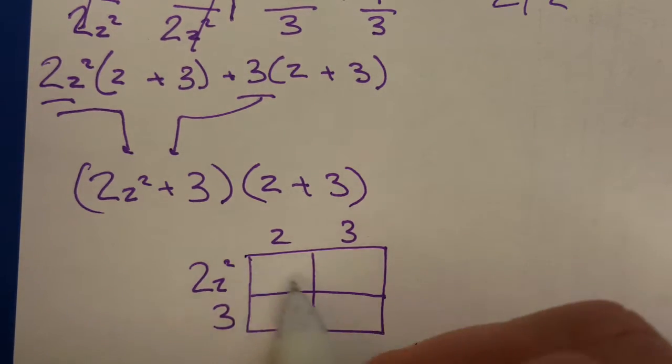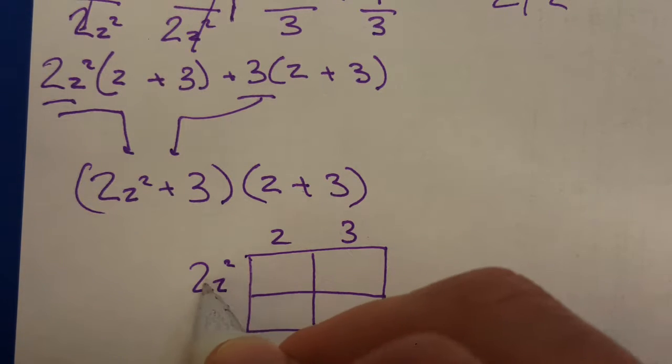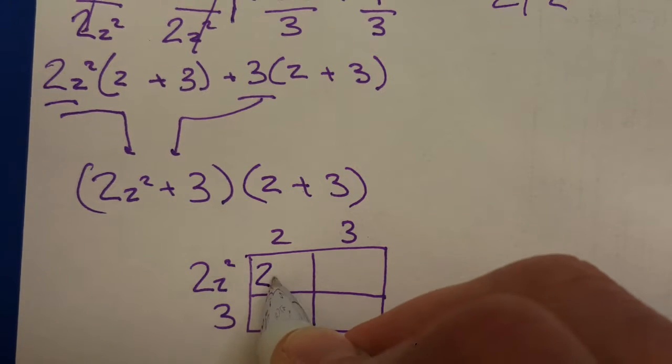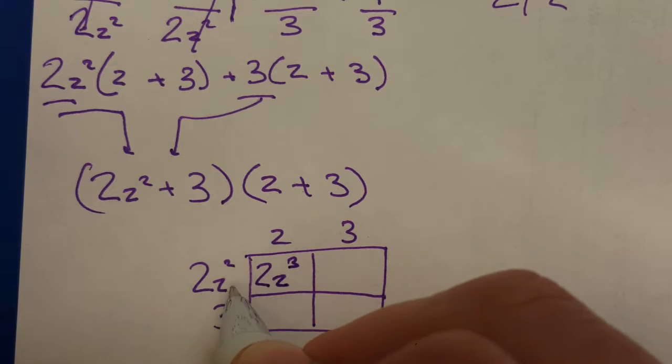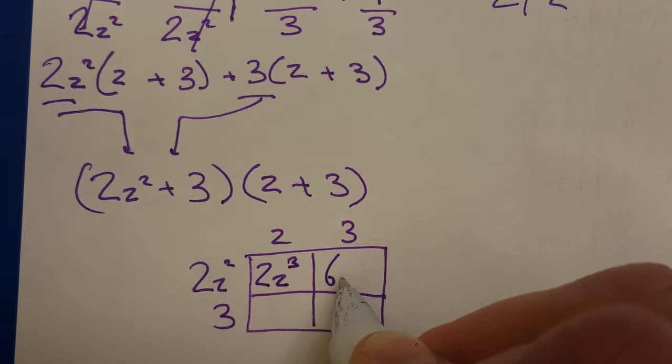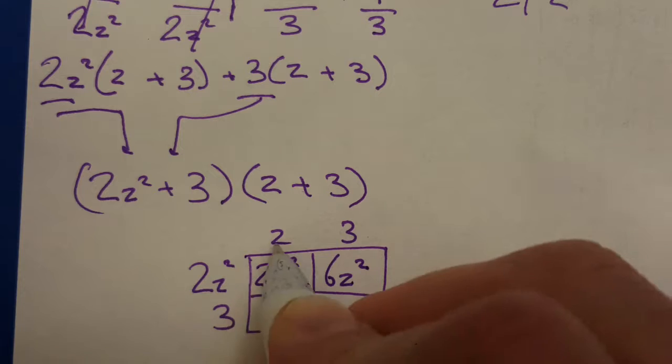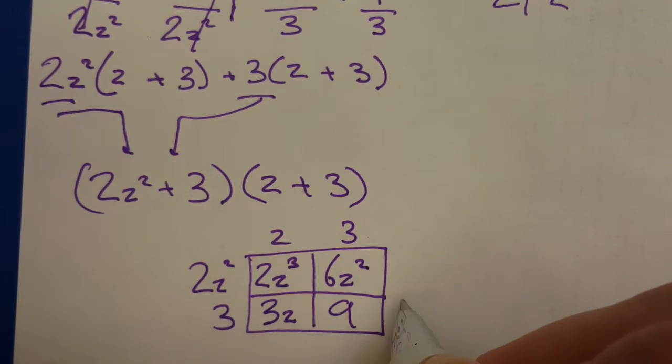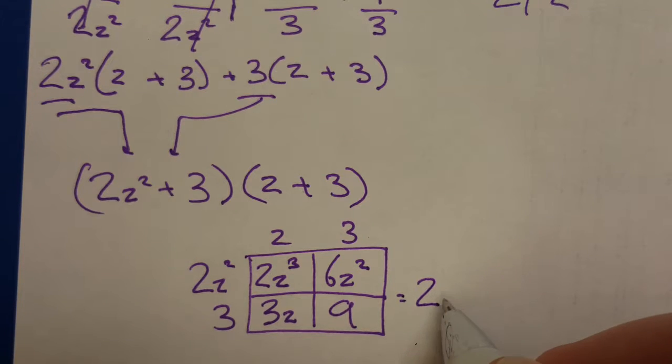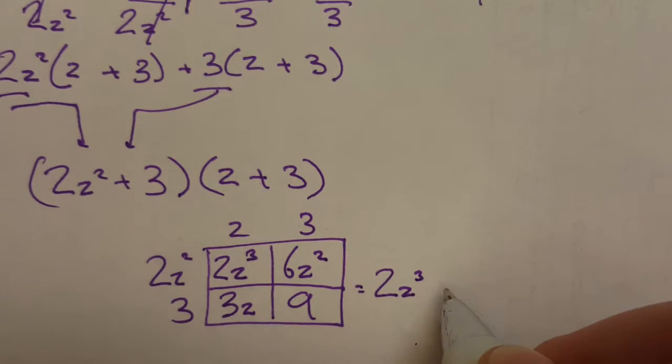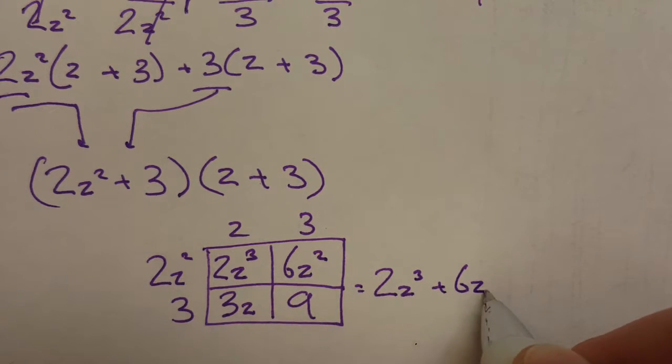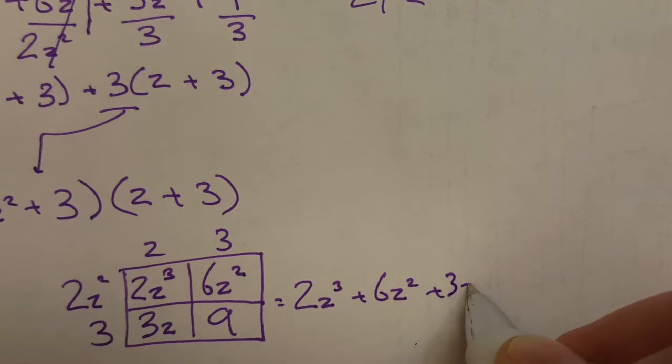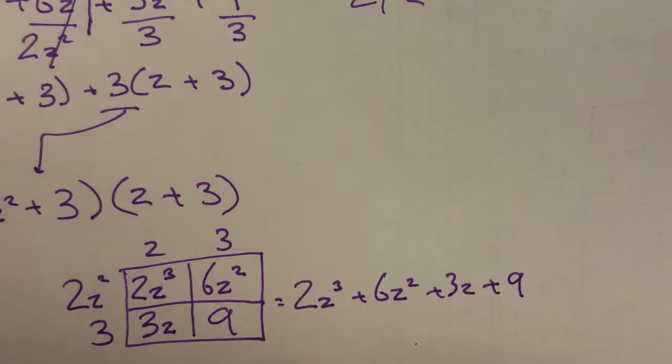So let's make a poly box here. Two by two. Let's prove it here. 2z times z is a 2z cubed. 2z squared times a 3 is a 6z squared. Let's see. A z times a 3 is a 3z. 3 times 3 is a 9. See here, I have a 2z cubed plus a 6z squared plus a 3z plus a 9.